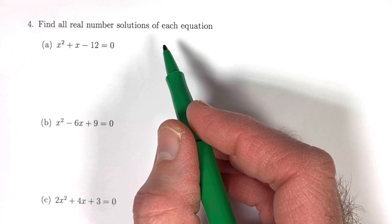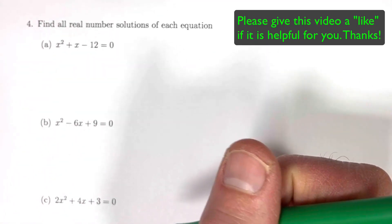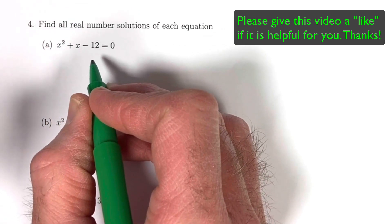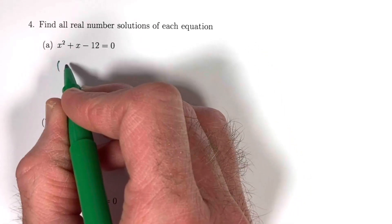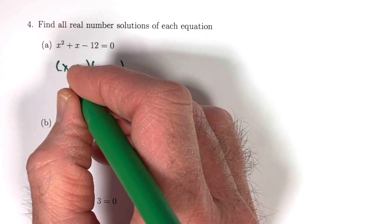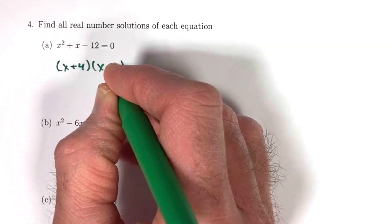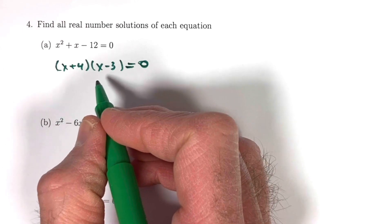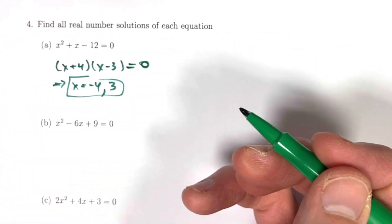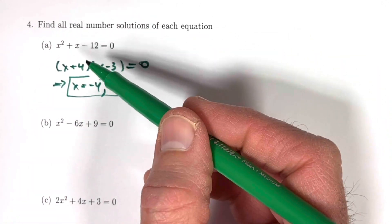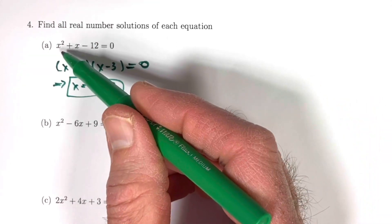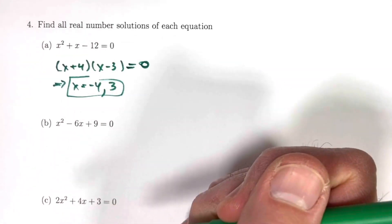Number 4 says find all real number solutions. Part A: x squared plus x minus 12 equals 0. This factors as x plus 4 times x minus 3 equals 0, giving x equals negative 4 or x equals positive 3. Checking: negative 4 squared plus negative 4 minus 12 is 16 minus 4 minus 12 equals 0. Plugging in 3: 9 plus 3 minus 12 equals 0. Both solutions check out.